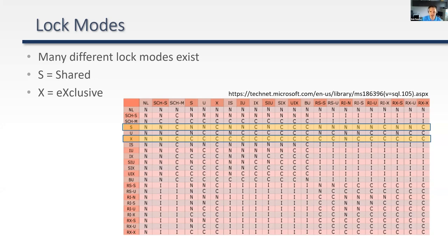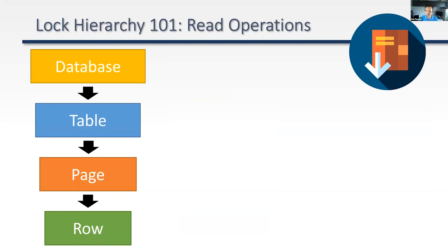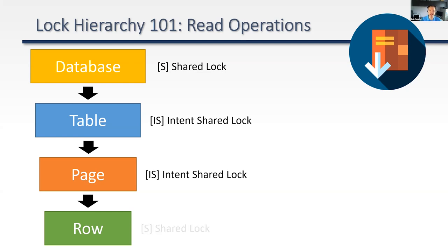Locks exist in a hierarchy with four levels: database, table, page, and row. For a SELECT query, at the database level our process takes a shared lock — all processes do this to say 'I'm in this database, don't drop it.' At the table and page levels, we take intent shared locks indicating shared locks are being taken at a lower level. The row itself has a shared lock on it.